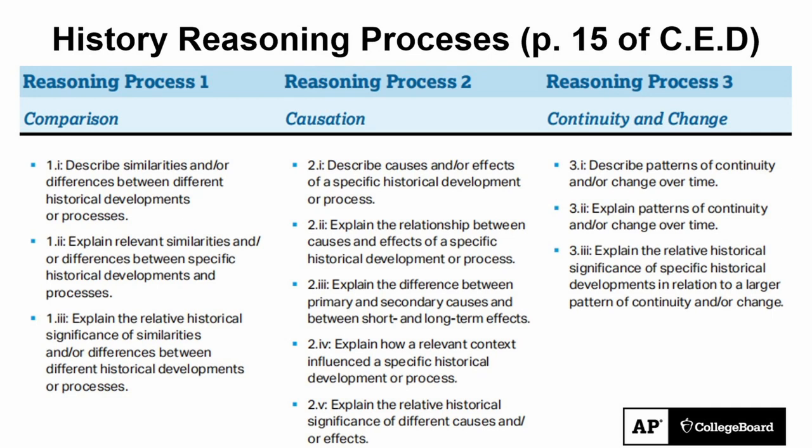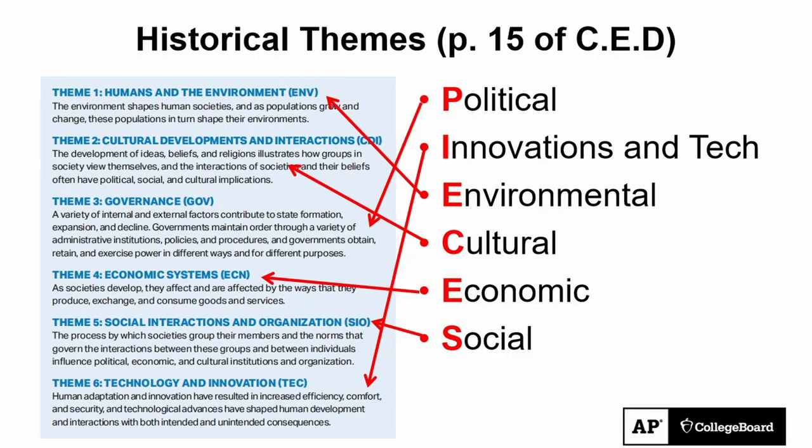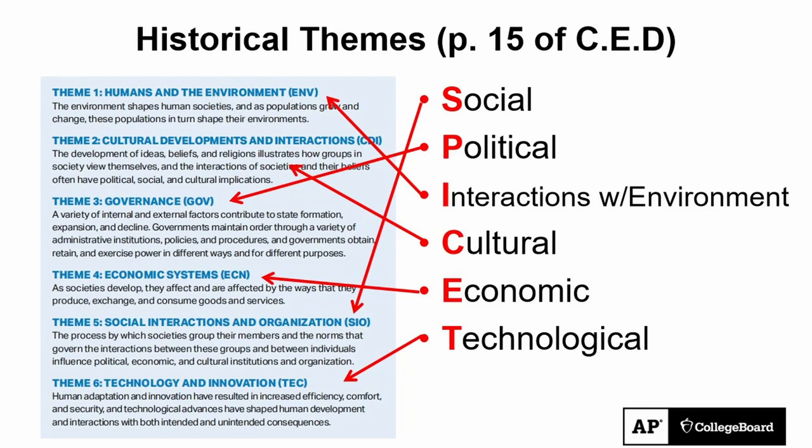First, we have the three history reasoning processes — the three C's: comparison, causation, and continuity and change over time. Next, we've got the six themes, sometimes using the acronym PIECES. You need all of the pieces to get the full picture. Or my personal preference, SPICE tea. When you're studying content, you should always be thinking about both the three C's of history reasoning processes and the six themes.